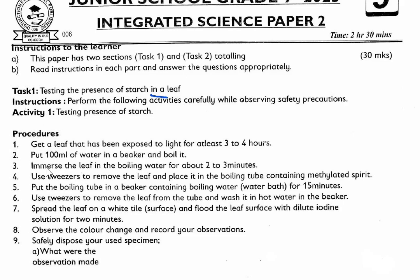The procedure is here. 1. Get a leaf that has been exposed to light for at least 3 to 4 hours. 2. Put 100ml of water in a beaker and boil it. 3. Immerse the leaf in the boiling water for about 2 to 3 minutes. 4. Use tweezers to remove the leaf and place it in a boiling tube containing denatured spirit. 5. Put the boiling tube in a beaker containing boiling water, that is a water bath, for 15 minutes. 6. Use tweezers to remove the leaf from the tube and wash it in hot water in the beaker. 7. Spread the leaf on a white tile and flood the leaf surface with dilute iodine solution for 2 minutes. 8. Observe the color change and record the observations. 9. Safely dispose of your used specimen.